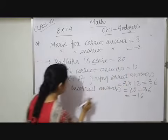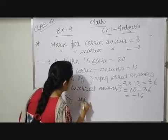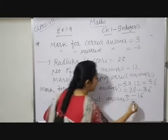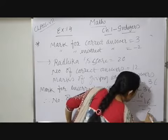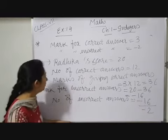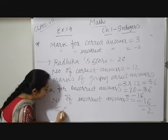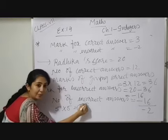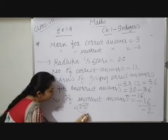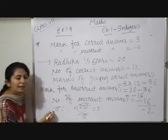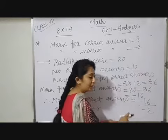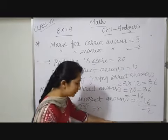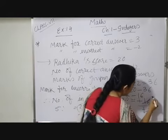Therefore, number of incorrect answers = total marks for incorrect answers ÷ marks per incorrect answer. Think of it like: if 5 pens cost 25 rupees total and each pen costs 5, divide 25 by 5 to get the number of pens. Similarly here, minus 16 ÷ minus 2: minus÷minus cancels, 16÷2 = 8.